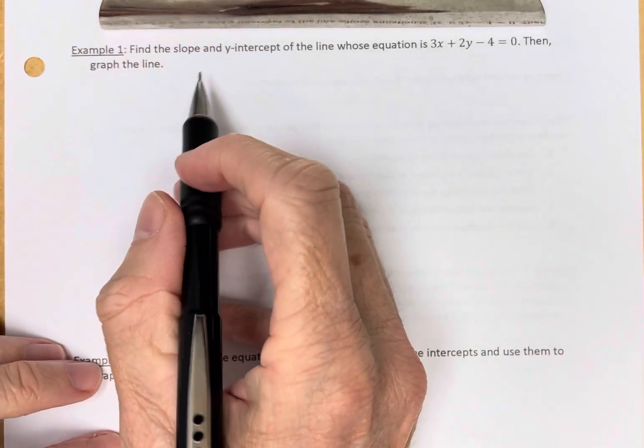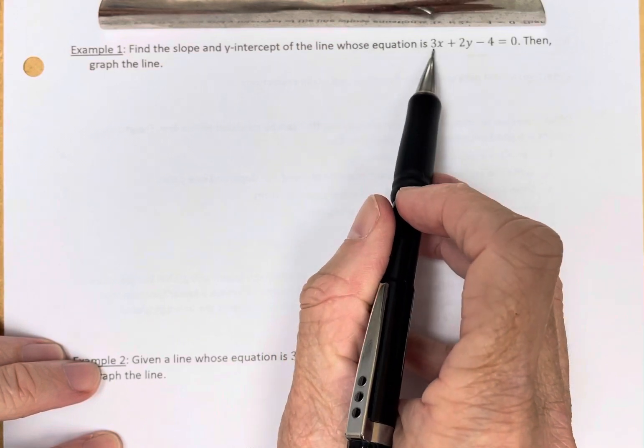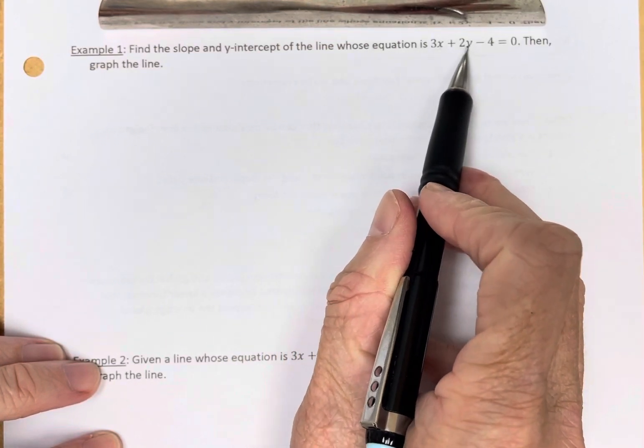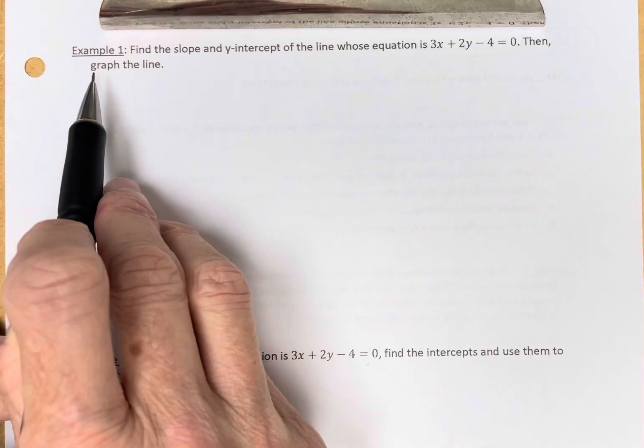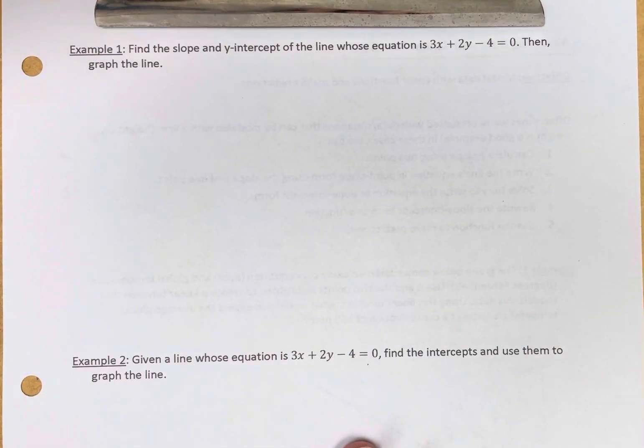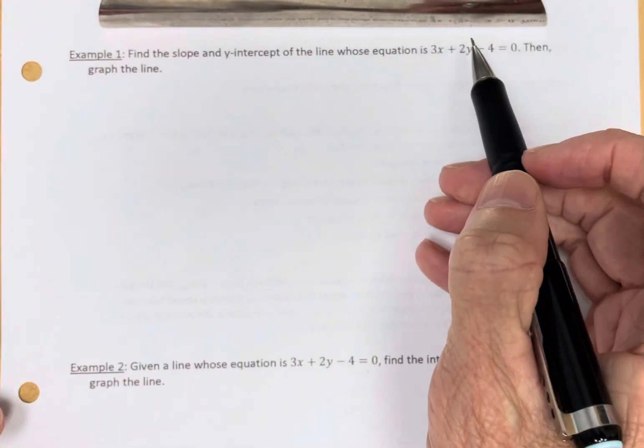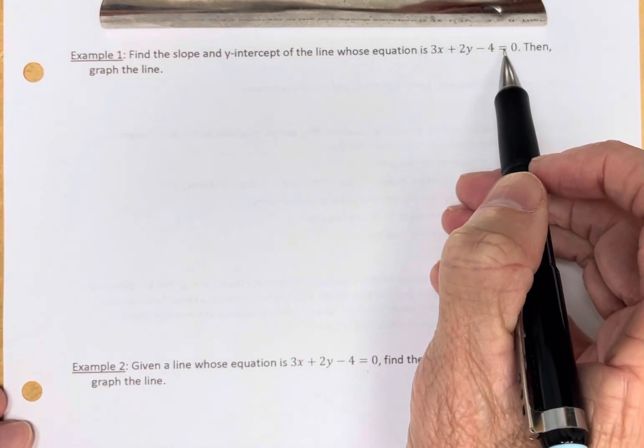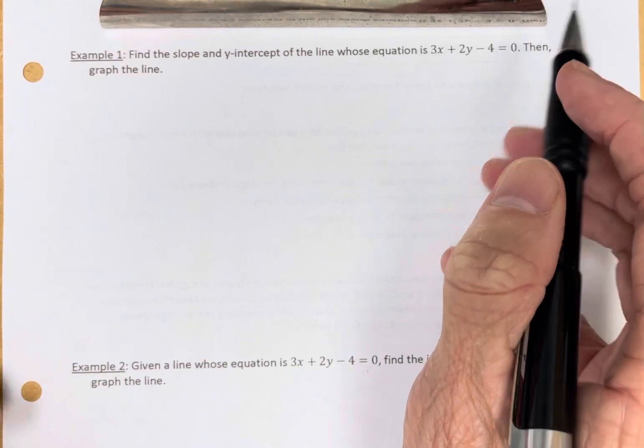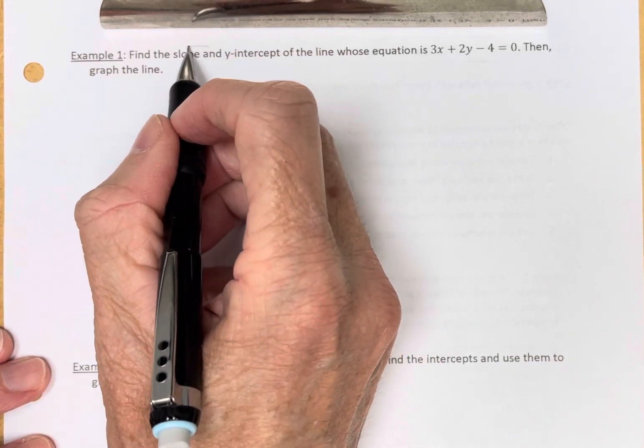Example 1: Find the slope and y-intercept of the line whose equation is 3x plus 2y minus 4 equals 0, and then graph the line. Now, in this example, I gave you the equation of the line in general form, and I want to find the slope and the y-intercept.